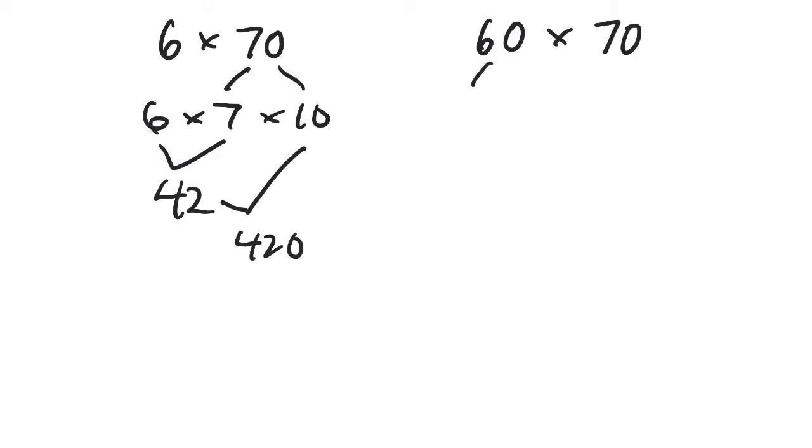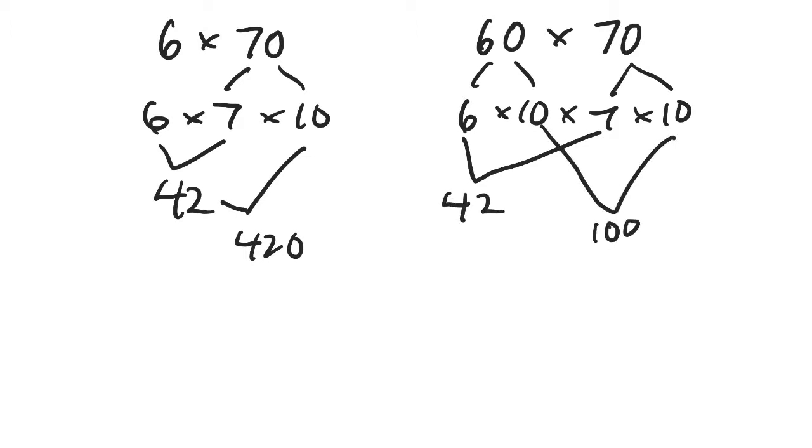Same thing over here. 60 breaks down into 6 times 10, and 70 breaks down into 7 times 10. And then if you put the 6 and 7 together, you have 42. 10 times 10 is 100. So now you have 42 hundreds, which is 4,200. So they always say just put the zeros on the end, but that's the reason why it works, just because of tens and hundreds and thousands.